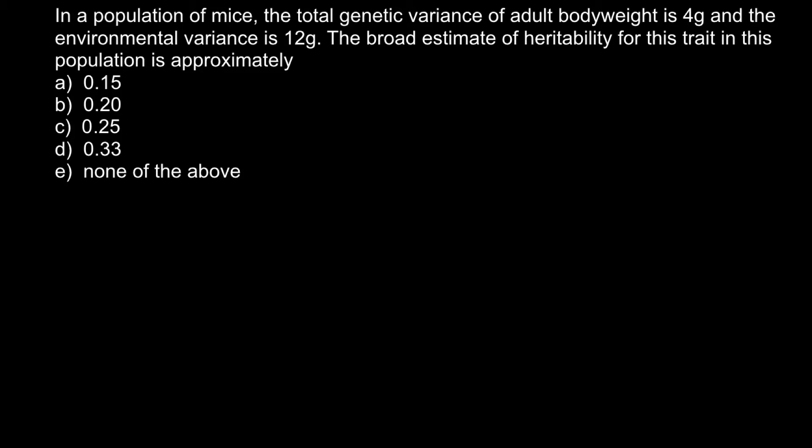Hi, this video is going to be about breeding and selection. Today's problem is: in a population of mice, the total genetic variance of adult body weight is 4 grams and the environmental variance is 12 grams.